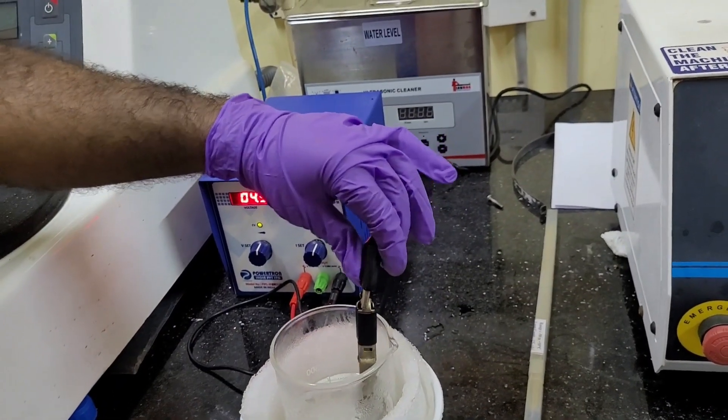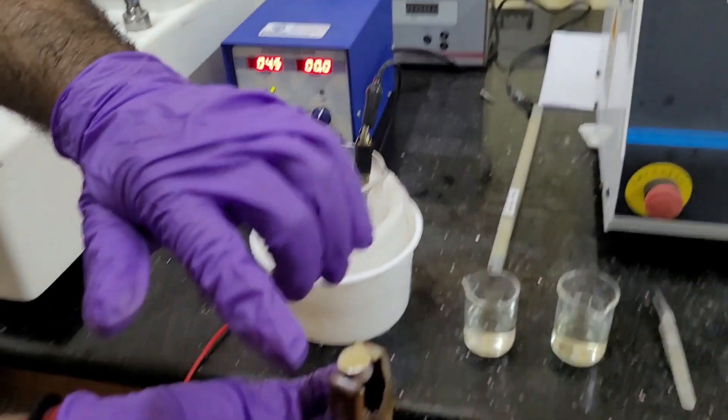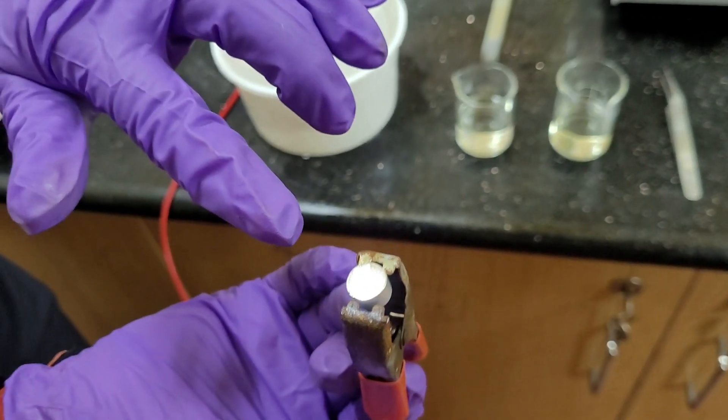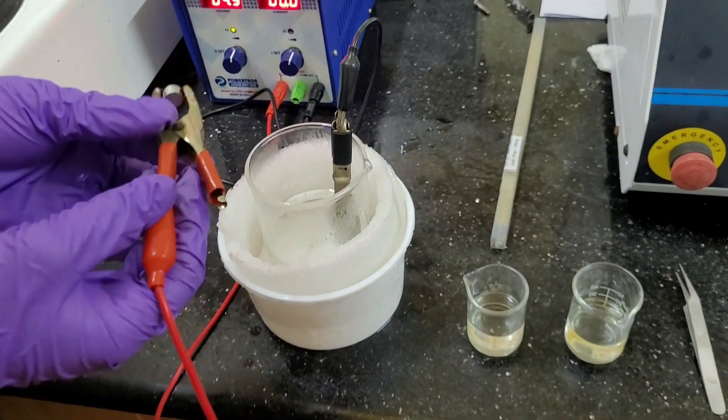First, cathode is already dipped into the electropolishing. Now, this is our sample. This is very well polished by using the standard electropolishing technique, metallographic polishing technique. Now, we are, this is mirror finish of the sample. Now, we are going to do the electropolishing.